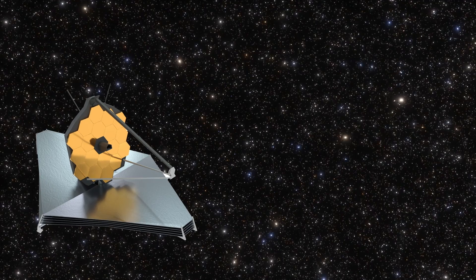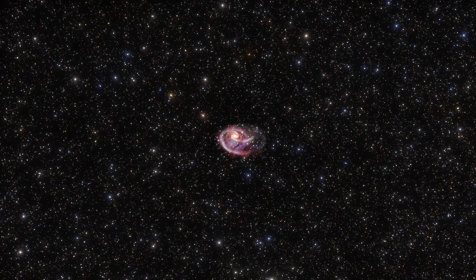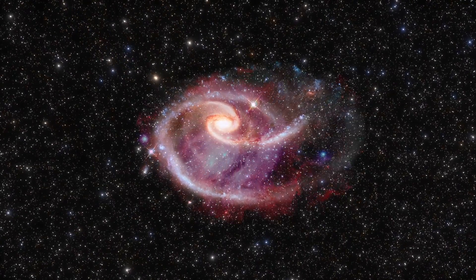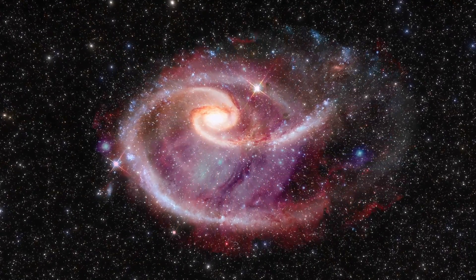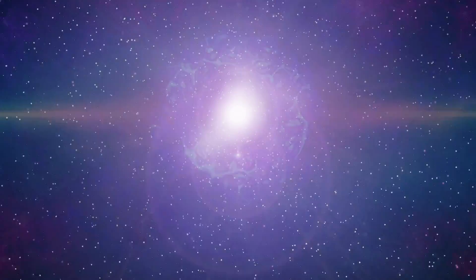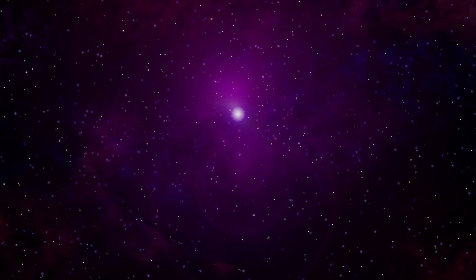Observations using the James Webb Space Telescope have revealed a galaxy 35 billion light-years from Earth. The findings suggest the galaxy, known as CEERS 93316, existed just 235 million years after the Big Bang. But wait—didn't the Big Bang happen a mere 13.8 billion years ago? How can this galaxy be further than that? And how big is the universe really?